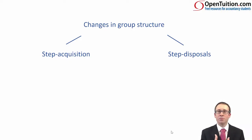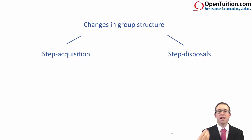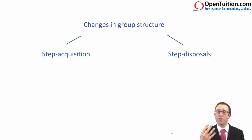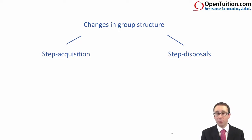Similarly, step disposals is going the other way. Maybe we have control and we start to sell some of our shares, and as we sell shares, maybe we lose control of the entity. The key bit we need to understand is when we buy or sell shares, where does that get us with regards to our percentage ownership?